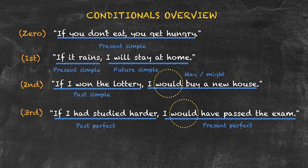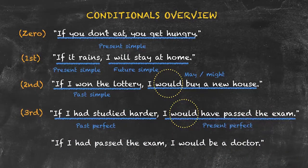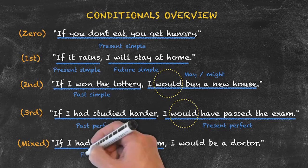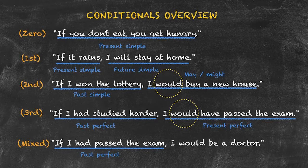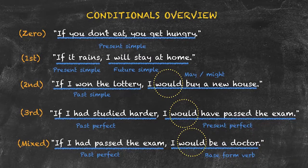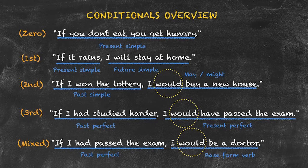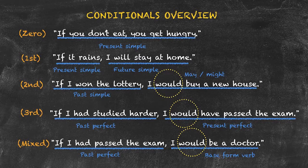Our final conditional example: 'if I had passed the exam, I would be a doctor.' This is an example of the mixed conditional. In the if clause, like the third conditional, we have the past perfect — 'if I had passed.' But in the other clause, we have the modal verb 'would' plus the base form — as in the second conditional. It's taken elements of the third conditional and the second conditional. With the third conditional, both situations relate to the past and are hypothetical. With the mixed conditional, only the if clause relates to the past; the other clause relates to the present: 'I would be a doctor now.' Both are hypothetical — I didn't pass my exams and I'm not a doctor.